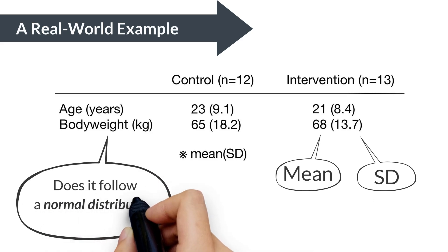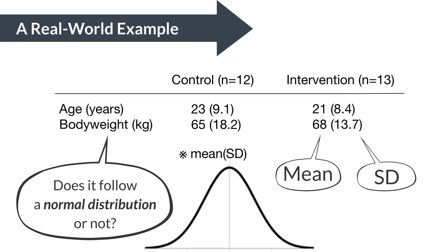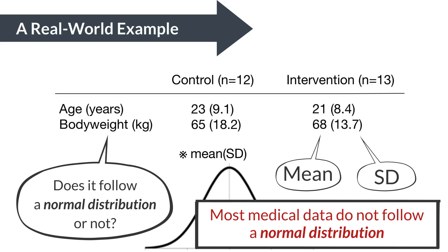However, just by looking at the numbers alone, we can't figure out whether these values follow a normal distribution. If the distribution is highly skewed, the mean may not be an appropriate representative, and the 95% rule for standard deviation doesn't apply.